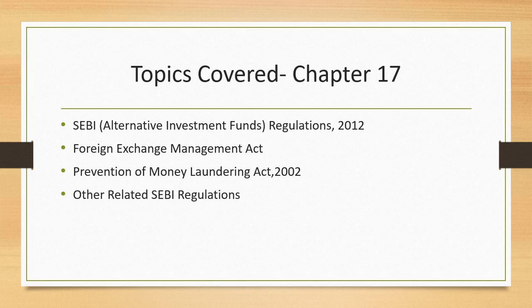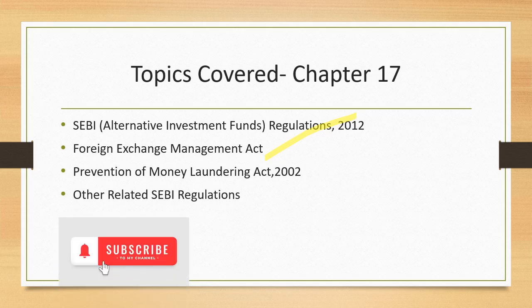The topics covered under Chapter 17 are listed broadly as A, B, C, D. The first is SEBI Alternative Investment Fund Regulation 2012, the second is the Foreign Exchange Management Act (FEMA), C is Prevention of Money Laundering Act, and D is other related SEBI regulations. In this video I will take you through 10 questions related to the Foreign Exchange Management Act. These questions are legal in nature, so I suggest re-verifying any doubts with the material, as legal concepts have many nuances.